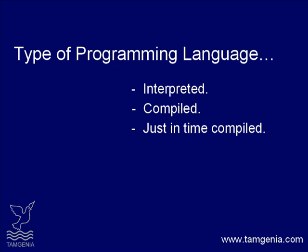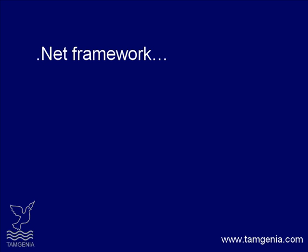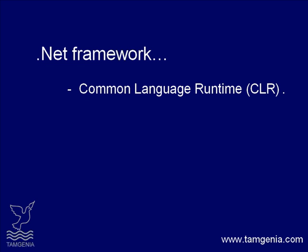Thus, environment-specific compilations are not a headache for programmers anymore — that part is done by the just-in-time compiler or runtime compiler. These languages are flexible and very productive for today's programming world. Java and C# are members of this group. The .NET framework is a new computing platform made by Microsoft that simplifies application development. Two main components of .NET are the Common Language Runtime (CLR) and the Class Library.